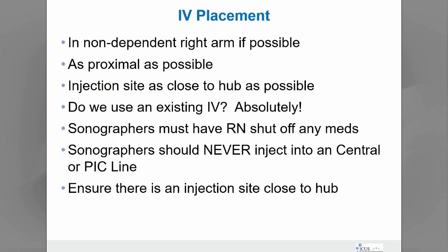With IV placement, we want to do this in the non-dependent right arm if possible. We don't want the patient laying on their left arm, as most sonographers roll the patient up on their left side with the left arm bent. So ideally we place the IV in the right arm. We want it as proximal as possible — even the antecubital area is okay, since we're usually placing and removing the IV almost as soon as we're finished. The injection site needs to be as close to the hub as possible, not where contrast has to travel through tubing where adherence of the contrast agent can occur.